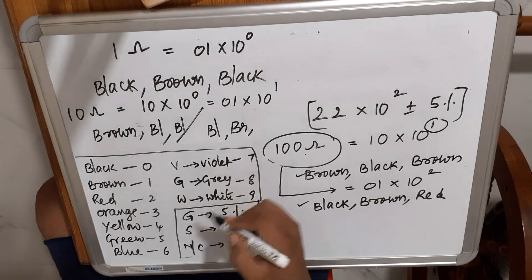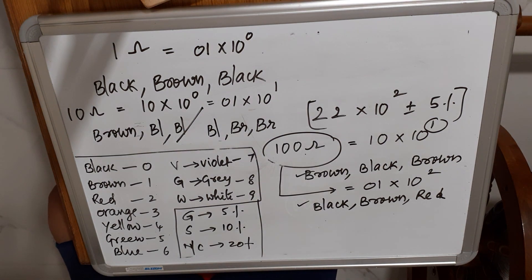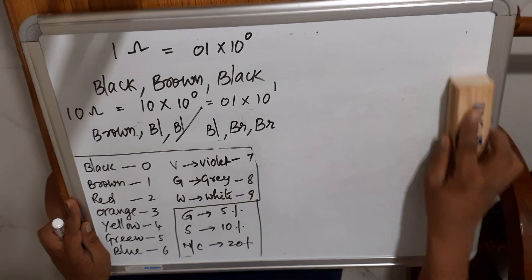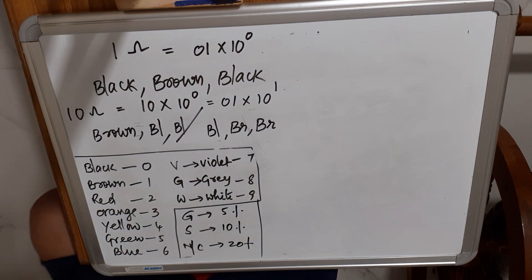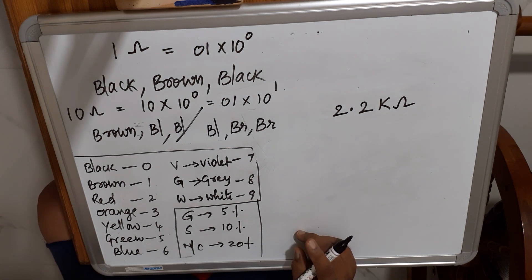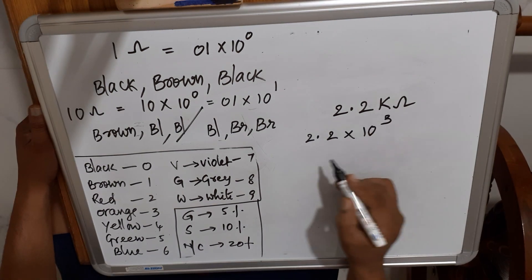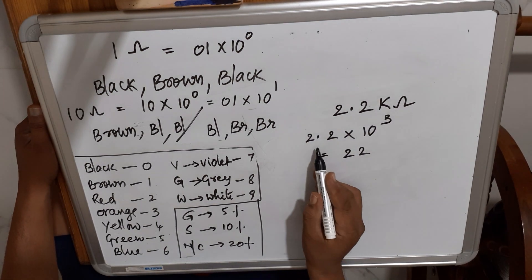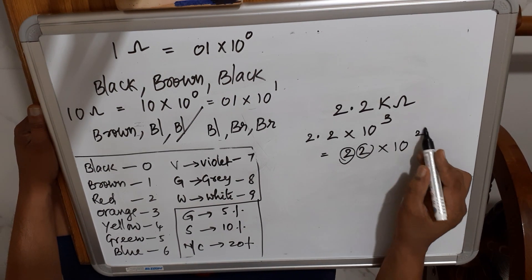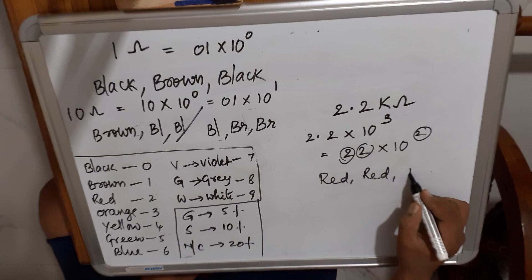For 2.2 kilo ohm, first convert: 2.2 × 10³ = 22 × 10². Bring to integer form — no decimals. All digits are 2, which corresponds to Red. So the color sequence is Red, Red, Red.